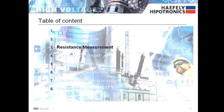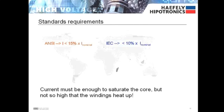Next is the resistance measurement mode. When performing a winding resistance measurement, it's important to use enough current to saturate the transformer core to obtain stable readings, but not so high that the windings heat up and provide faulty readings. The ANSI standards state that the current used should be less than 15 percent of the transformers nominal current, while the IEC states less than 10 percent.